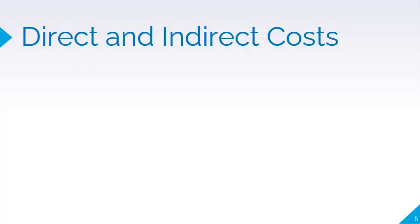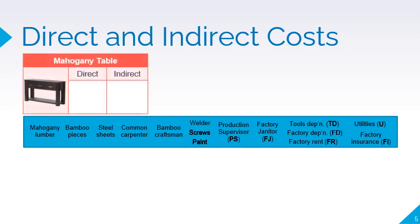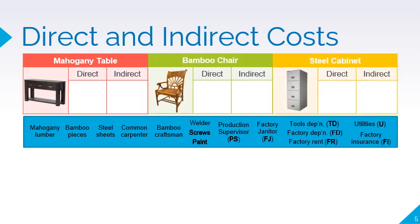Let's have an illustration. Suppose that a furniture manufacturer incurs the following costs. The company manufactures three types of furniture: a mahogany table, a bamboo chair, and a steel cabinet. Let us classify the costs as direct or indirect with the mahogany table, bamboo chair, and steel cabinet as our cost objects. You can pause the video to try answering by yourself.